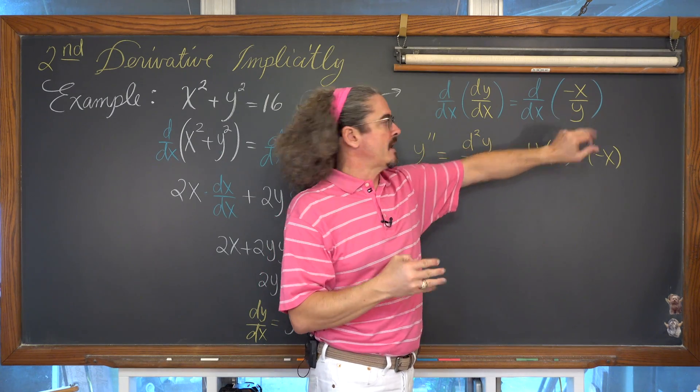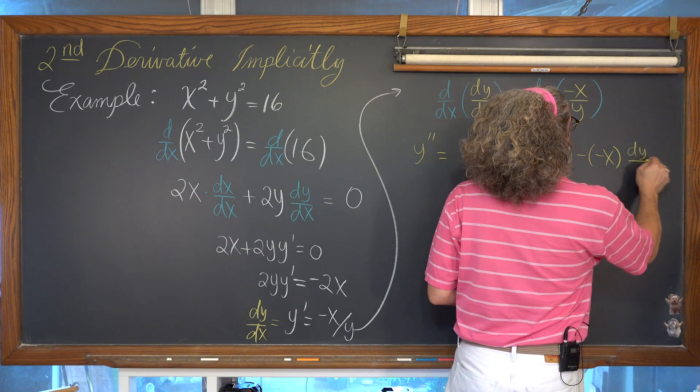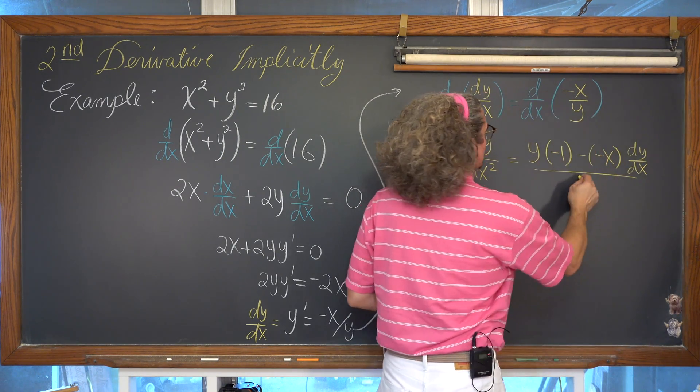Well, so let's just write this as a y prime. We'll write dy over dx. All over the denominator squared.